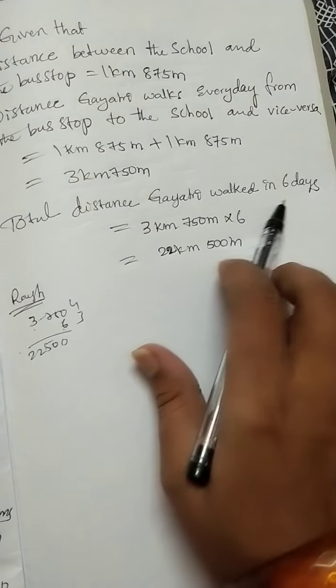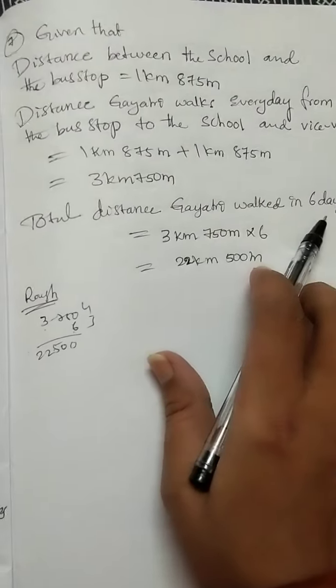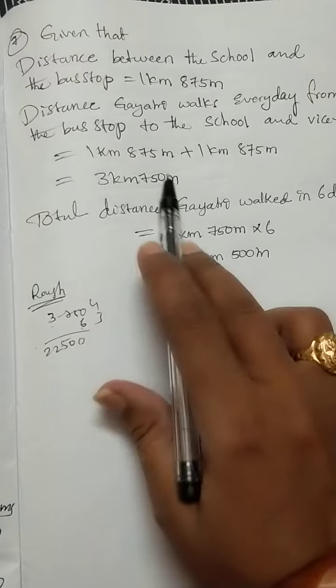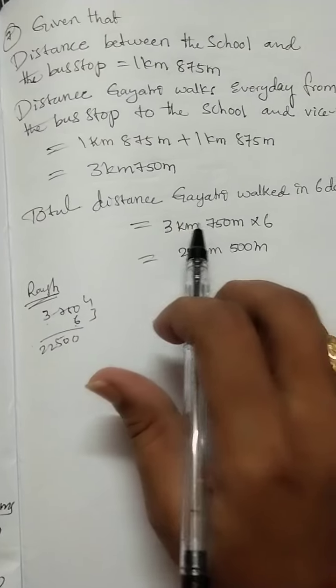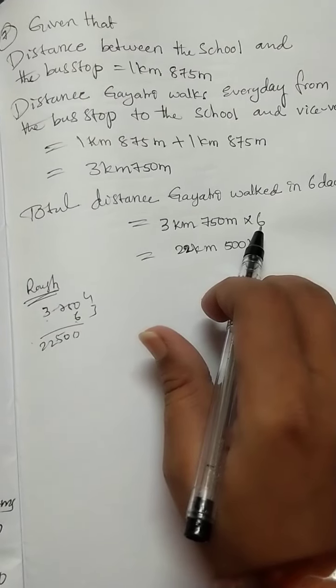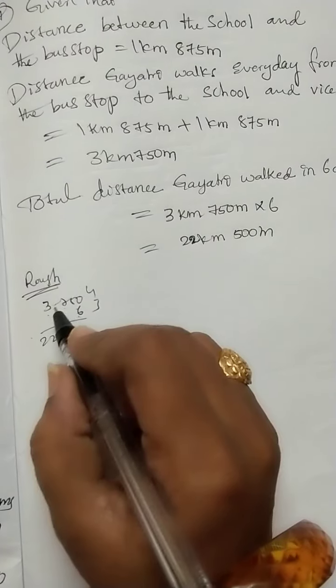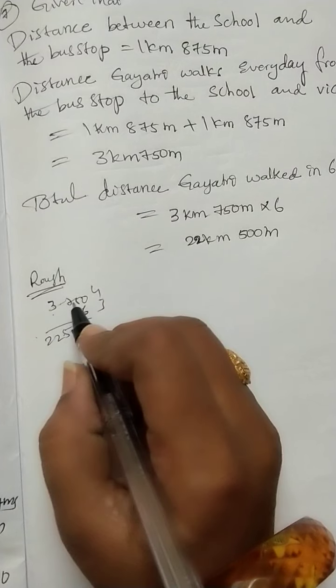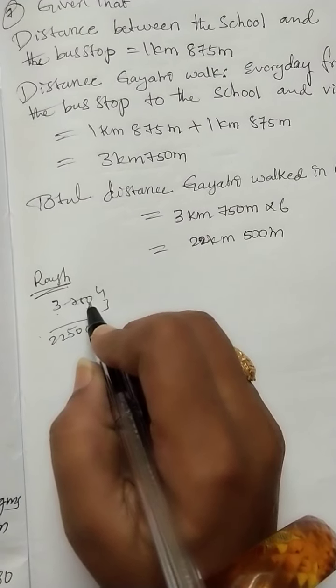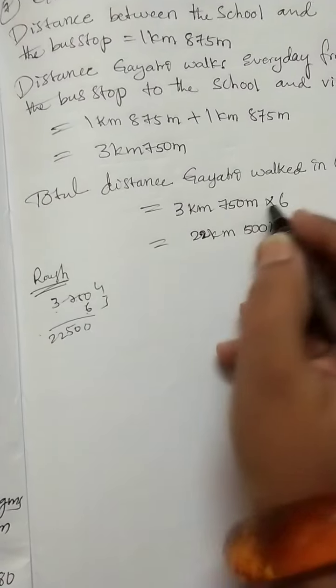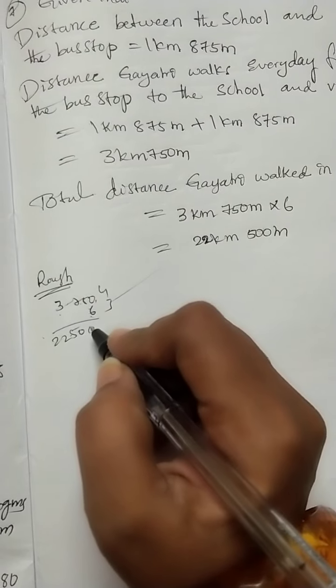Total distance Gayathri walked in 6 days: multiply the 1 day distance by 6. Let's do the rough work. 3750 meters multiply by 6.